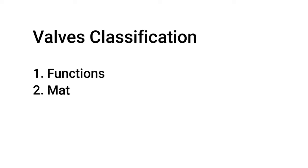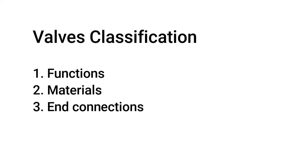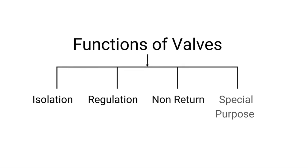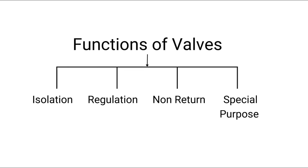Valves can be mainly classified based on their functions, materials, and end connections. Firstly, we will see classification based on function. Valves are used for performing the following functions. There are mainly four types: isolation, regulation, non-return, and special purpose.